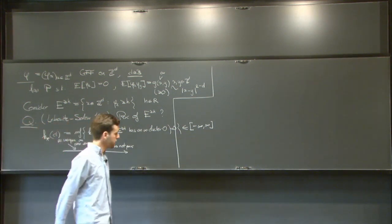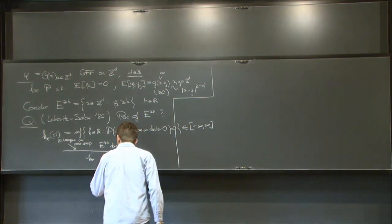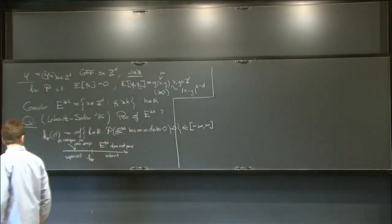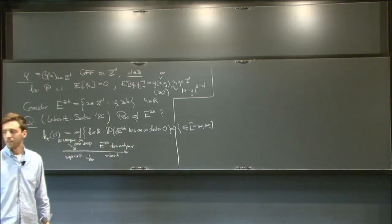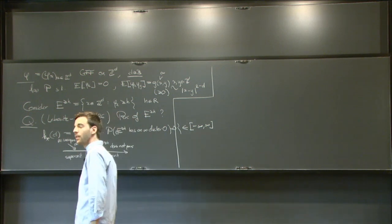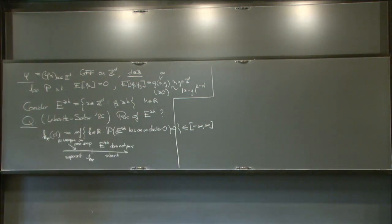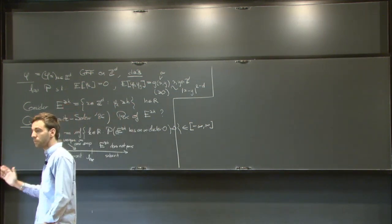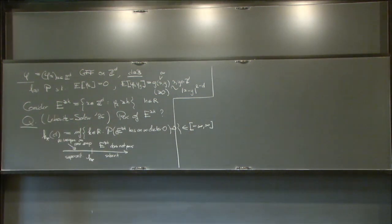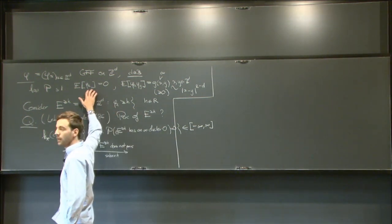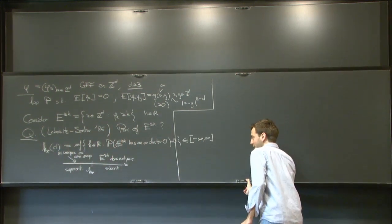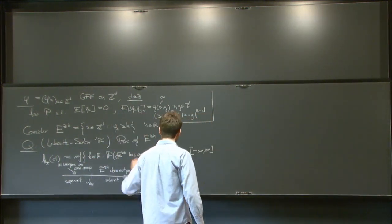Connectivity is always meant in the nearest neighbor sense. So the subcritical regime lies above h* and the supercritical below h*, which will take you a couple of minutes getting used to. There is a symmetry in this problem — if I take h equal to zero, the two sets have the same law because the mean is zero. This is how it was set up in the original paper and I wanted to keep it that way.